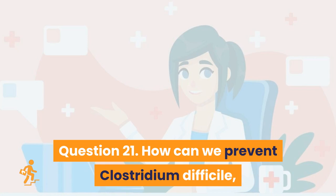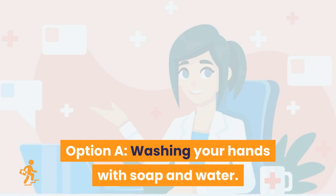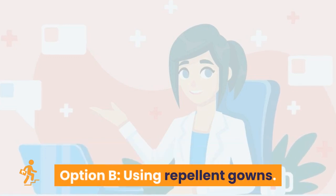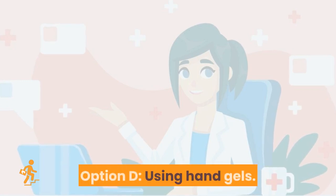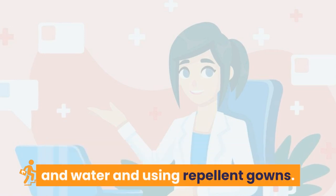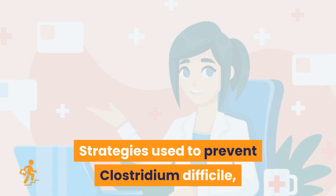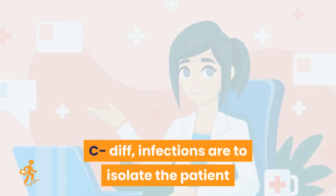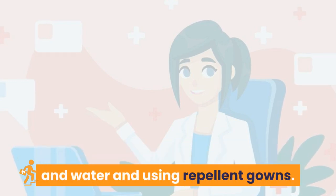Question 21. How can we prevent Clostridium difficile (C. diff) infections? Option A: Washing your hands with soap and water. Option B: Using repellent gowns. Option C: Limit visiting times. Option D: Using hand gels. Right answers are Options A and B. Strategies to prevent C. diff infections include isolating the patient and initiating contact precautions by washing your hands with soap and water and using repellent gowns.